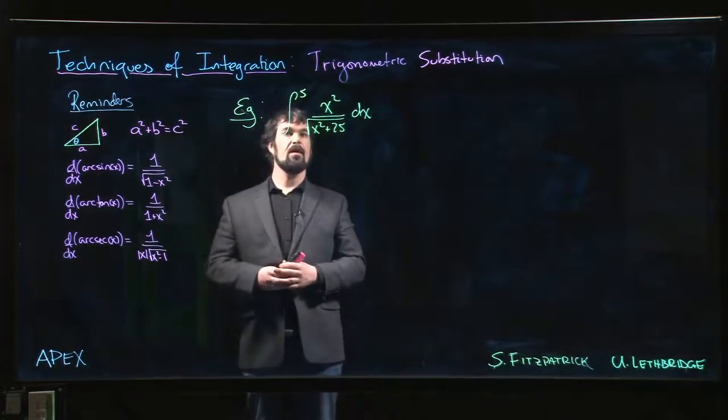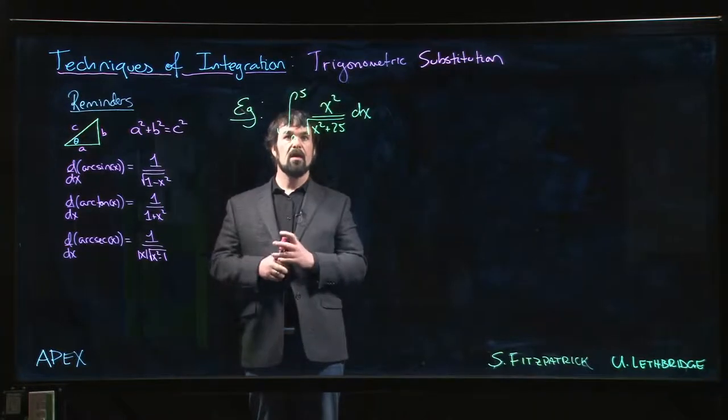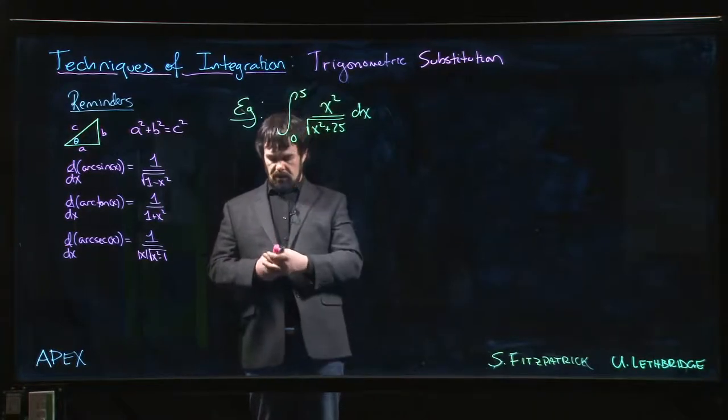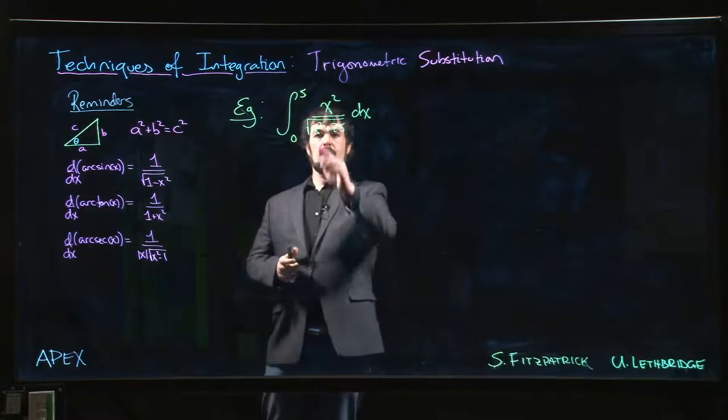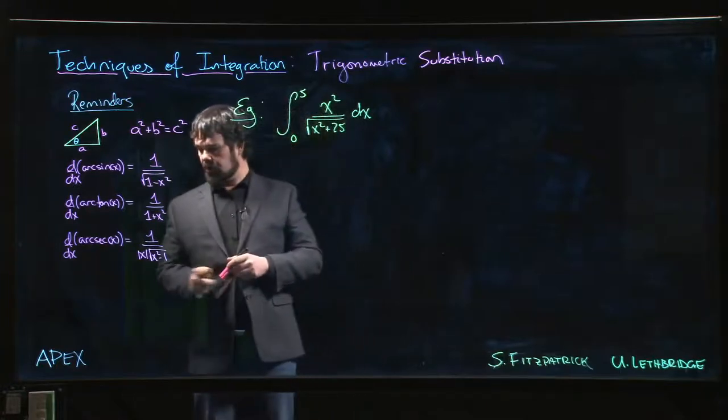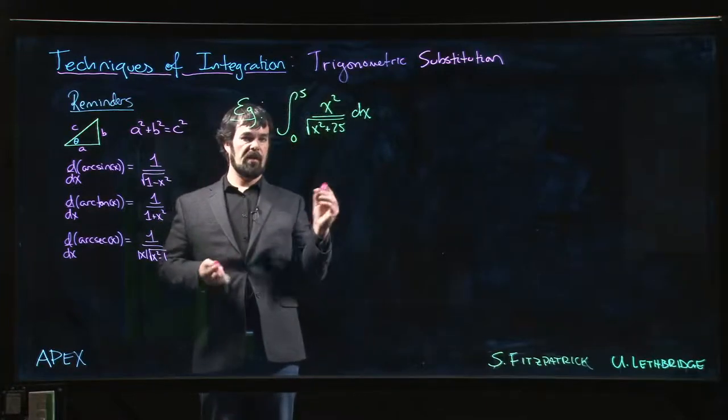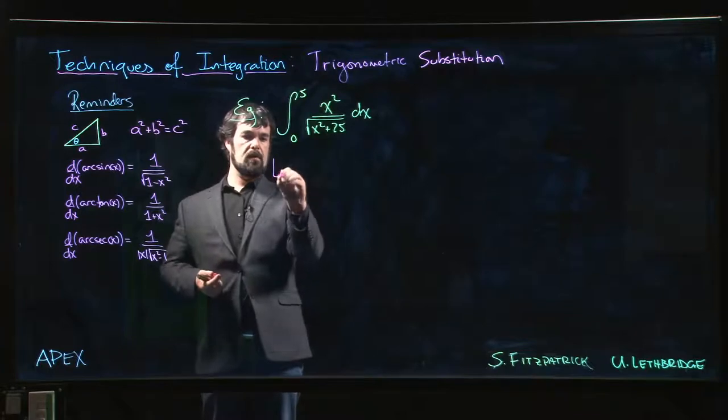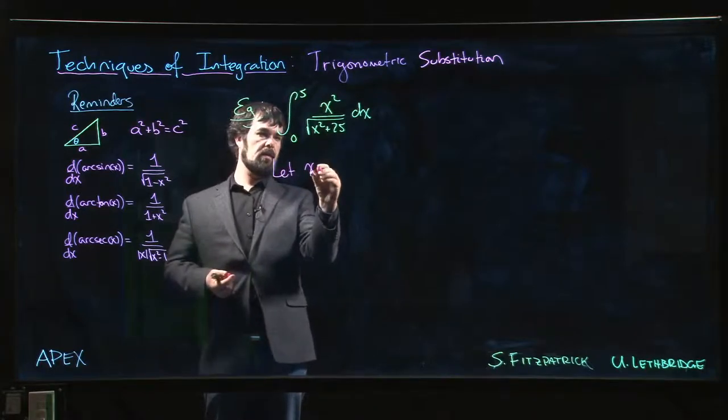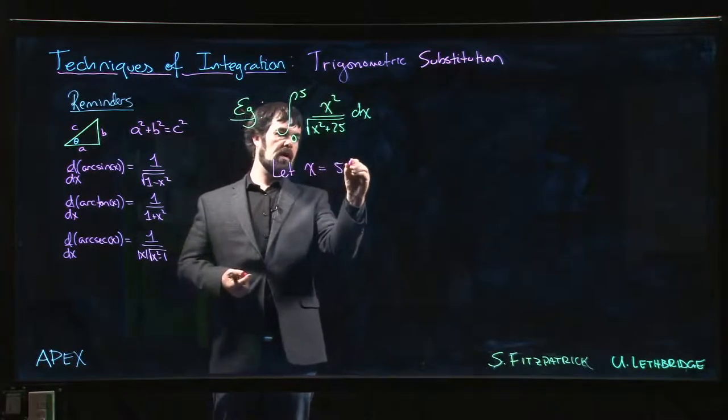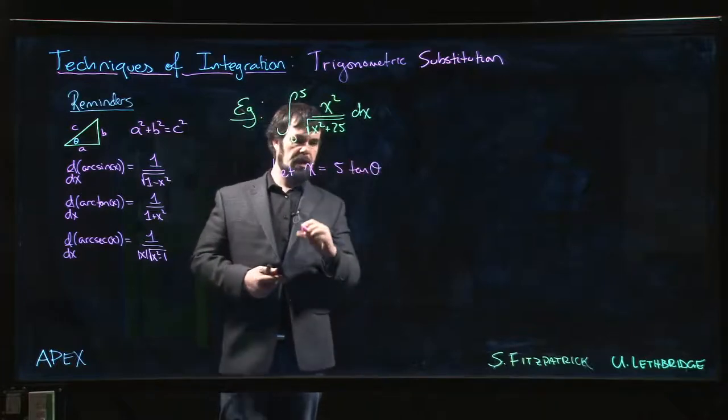We'll do one last example, this time involving a definite integral. Again, x squared plus 25, we look for that pattern, looks like arcsine. So we're going to let x equal 5 tan theta.